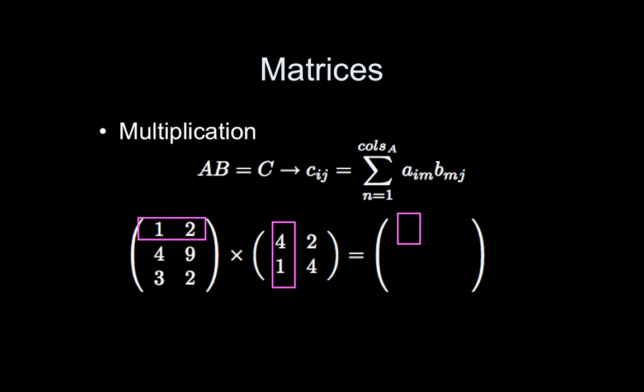So how do you do the multiplication? Well, you work across the rows of the first matrix, and you work down the columns of the second. So there's this equation here...